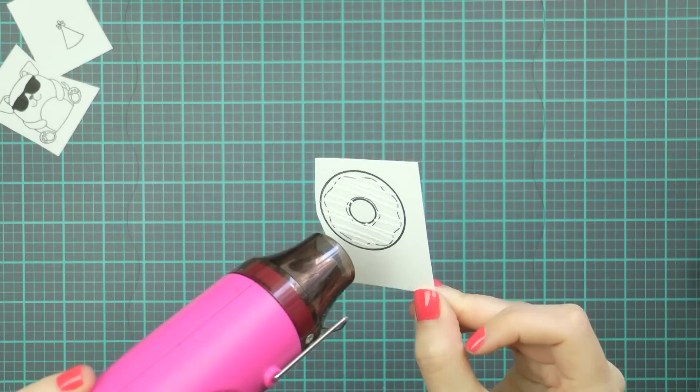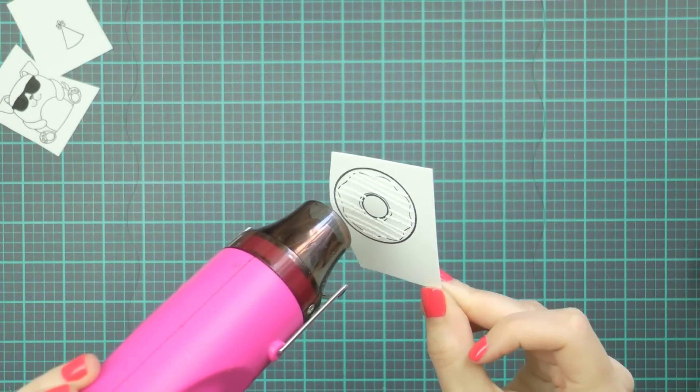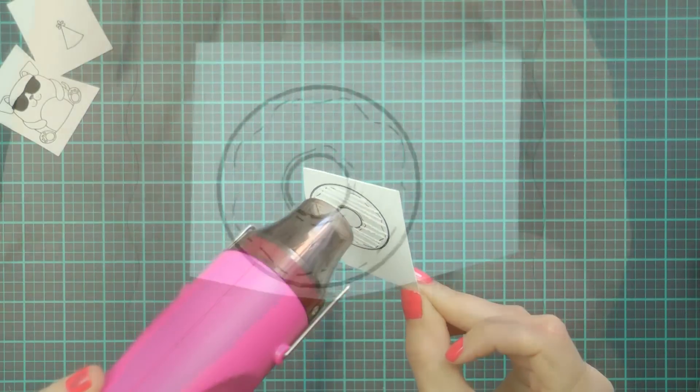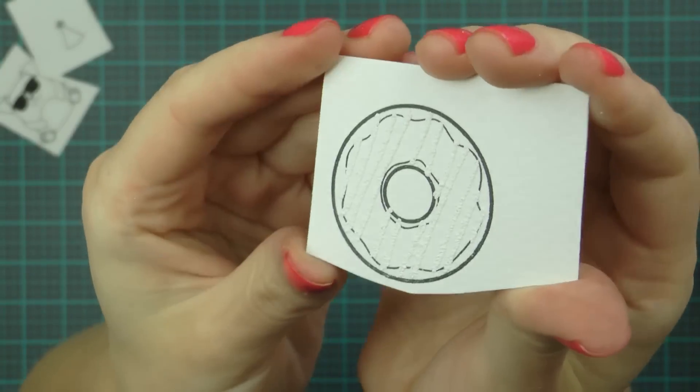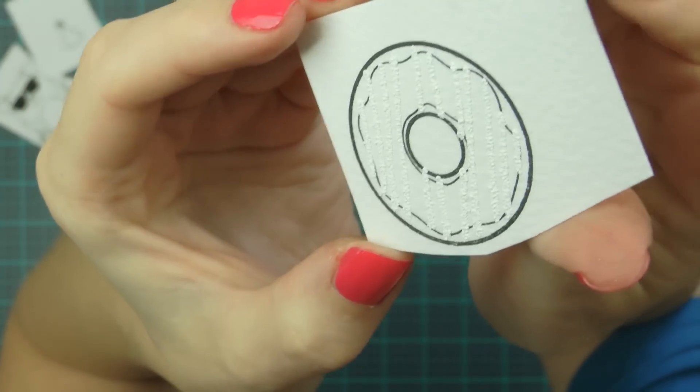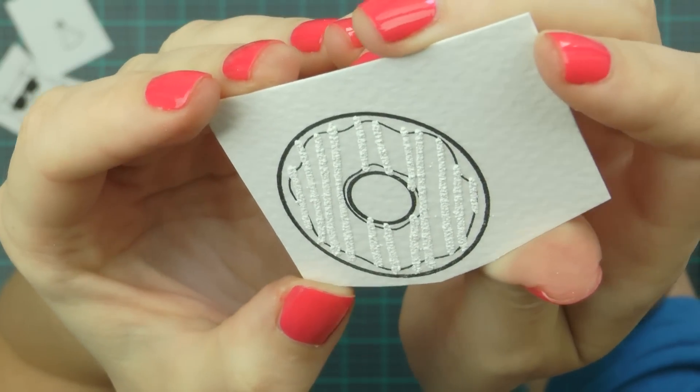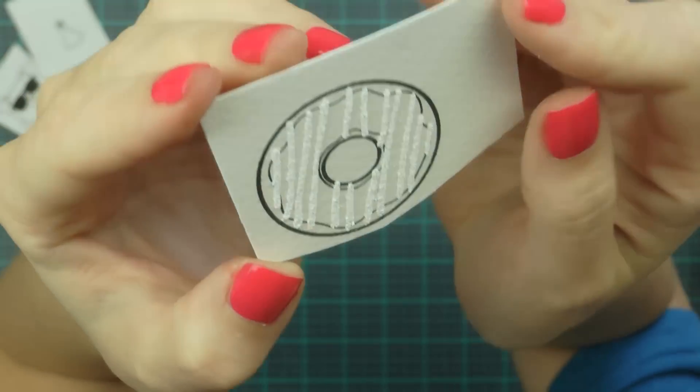It works beautifully for adding dimensional snow, but you know it's kinda too early for snow on our cards just yet, so I have discovered it looks awesome on these donuts as well. I'm going to heat set it and check out that dimension, I mean it looks really really cool.